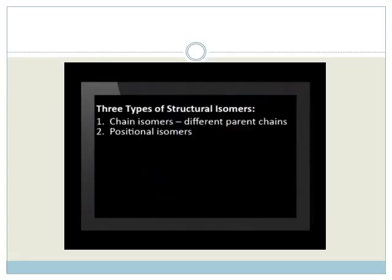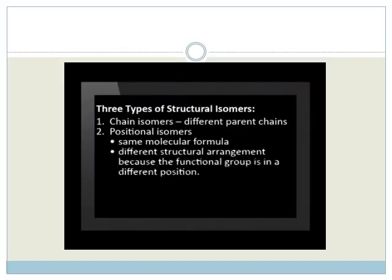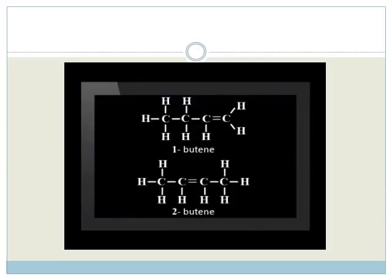The second type of isomerism is positional isomerism. Positional isomerism is when molecules have the same molecular formula but different structural arrangement because the functional group is in a different position. An example of positional isomerism is 1-butene and 2-butene. You can see that the position of the double bond has shifted from the first carbon to the second carbon.